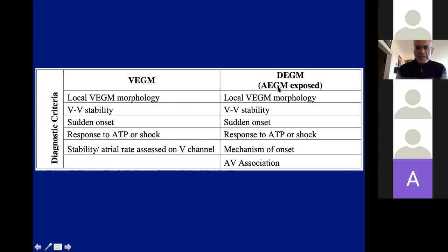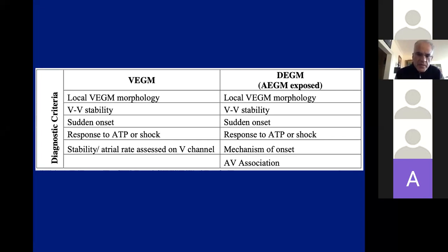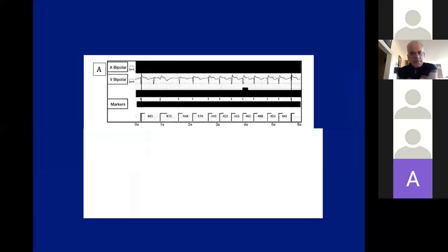For the study, we took 100 device electrograms that were complex — 50 SVT and 50 VT. We covered the atrial channel initially and gave them to EP specialists, seasoned attendings, fellows, and EP nurses. We had them interpret and state what it was and what criteria they used. After that, we uncovered the atrial channel and gave them the same electrograms in a different order to reinterpret.